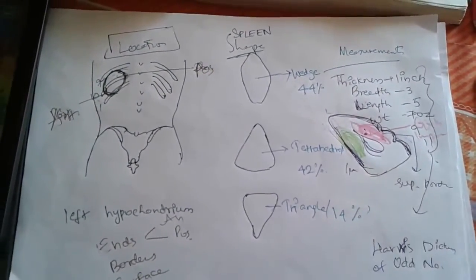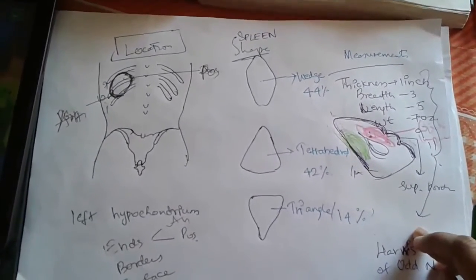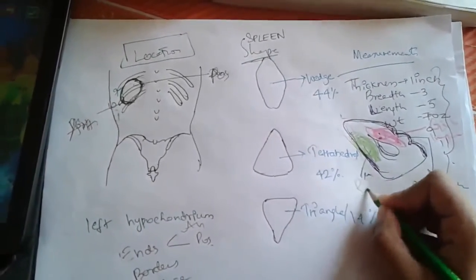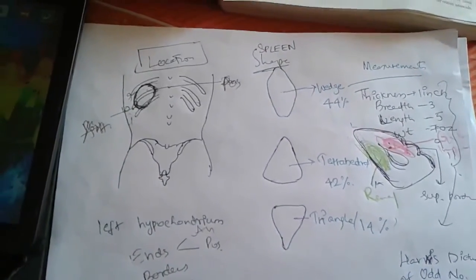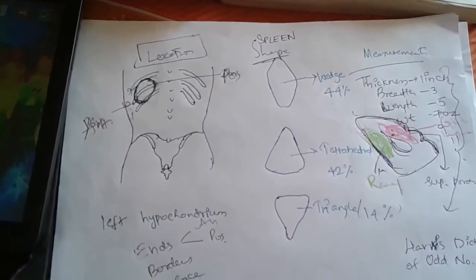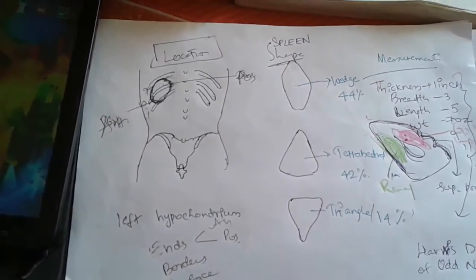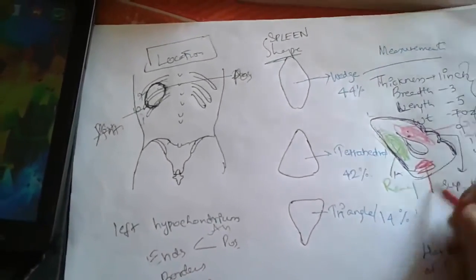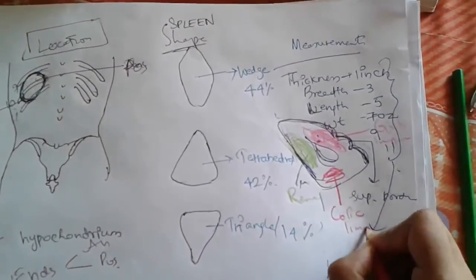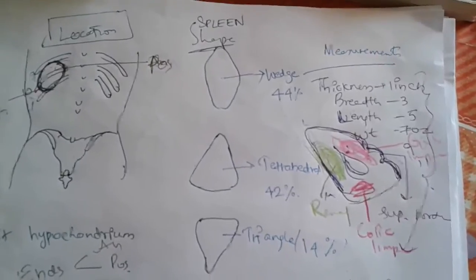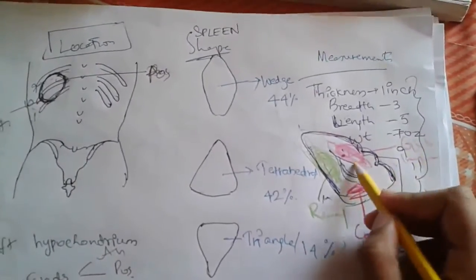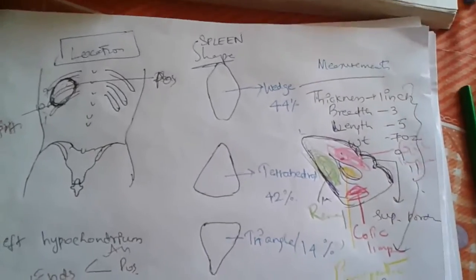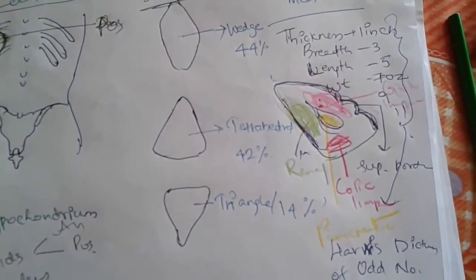The renal impression is formed by the left kidney and it is found between the intermediate and the lower borders. The colic impression is produced by the left colic flexure and it is found in front of the lateral end. The pancreatic impression is found at the hilum of the spleen.